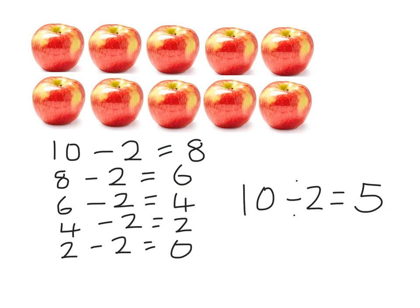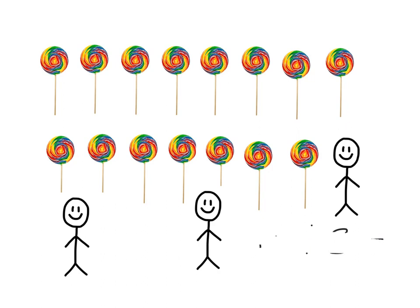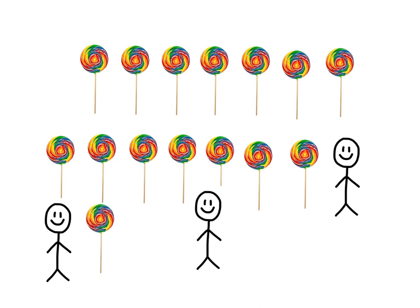The answer is the same, but the strategy is different. Let's have a look at another problem. This time I have fifteen lollipops, and there are three people who want the lollipops. So I am trying to work out what fifteen divided amongst three people will equal. I am going to use my first strategy of equal sharing to work this out, equally sharing out the lollipops to the three people until each person has the same amount.